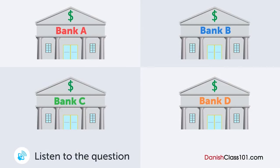En mand og en kvinde snakker om banker. Hvilken bank vælger kvinden? Jeg overvejer at åbne en ny bankkonto fordi jeg skal starte på et deltidsjob. Hvilken bank synes du er god? Både Bank A og Bank B har mange filialer og pengeautomater. Bank A tager penge hver gang du bruger deres pengeautomater. Bank B lader dig bruge pengeautomater gratis i dagstimerne på hverdagen. Bank C er altid gratis for pengeautomater men har ikke så mange. Bank D er bedst for rentesatser. Jeg vil kun bruge kontoen til penge fra mit deltidsjob og har ingen plan om at sætte mange penge ind. Så bør du vælge den med mange pengeautomater og lave gebyr.